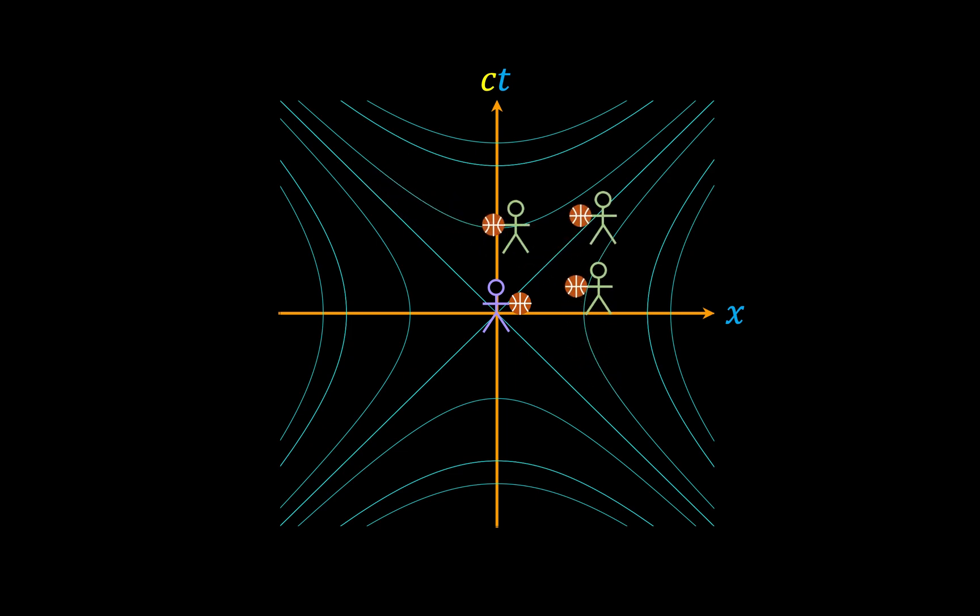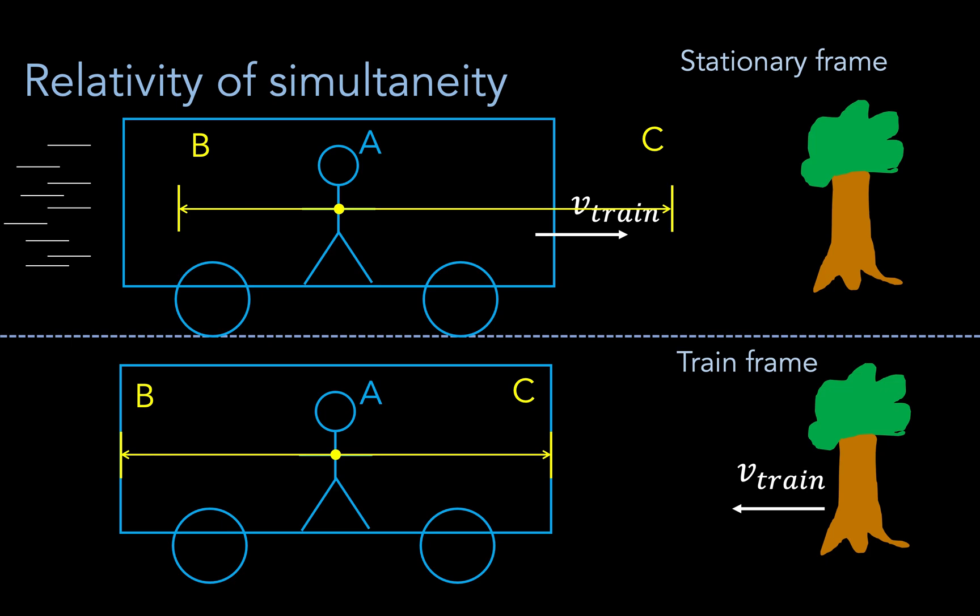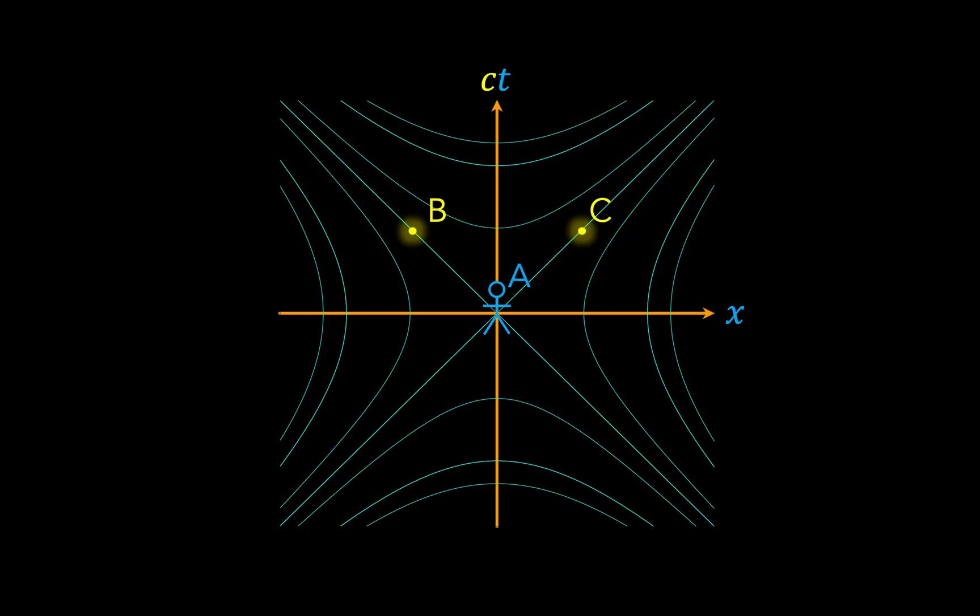So in our example with the ball, it's clear that events a and b are connected by a time-like interval. Now this analysis can be applied to the case of the rays of light as well. So here, event a is the light being emitted, and events b and c are the rays hitting the back and front of the train respectively. Now from the perspective of event a, events b and c occur at the same time. And this won't change if we just perform a spatiotemporal translation such that event c sits at the origin.